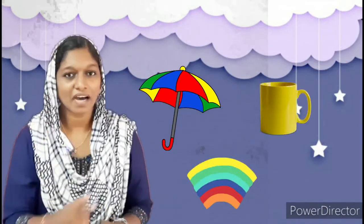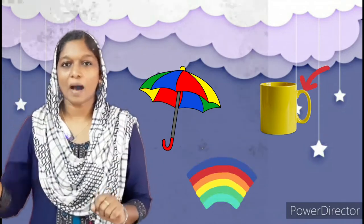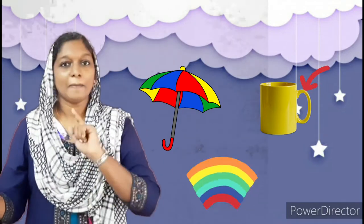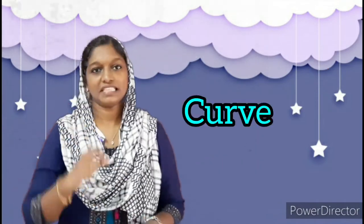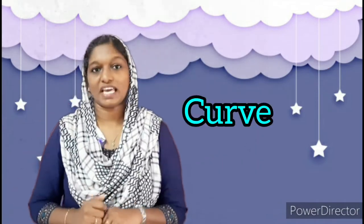Now time to recollect the things which look like a curve. Umbrella, mug, and then rainbow. Umbrella, mug, rainbow. Hope you all understood the concept of curve. Isn't it? Okay.